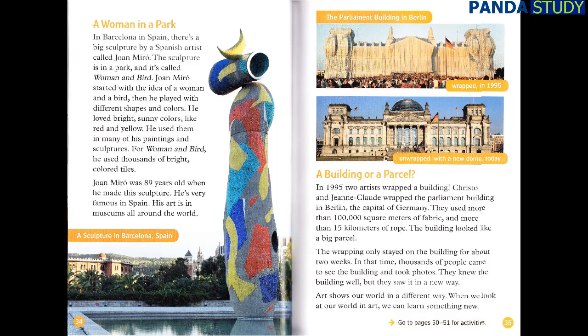A Building or a Parcel. In 1995, two artists wrapped a building. Christo and Jean-Claude wrapped the Parliament building in Berlin, the capital of Germany. They used more than 100,000 square meters of fabric and more than 15 kilometers of rope. The building looked like a big parcel. The wrapping only stayed on the building for about two weeks. In that time, thousands of people came to see the building and took photos. They knew the building well, but they saw it in a new way. Art shows our world in a different way. When we look at our world in art, we can learn something new.